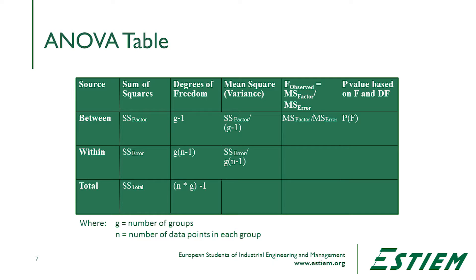In the degrees of freedom column, the between-sample is 5 minus 1, or 4. The within is g times (n minus 1) because each subgroup has 10 observations, so that's 10 minus 1, giving 45. The total degrees of freedom would be 49. We lose minus 1 degree of freedom because we're calculating everything relative to the mean. The next column is mean squared error or variance — that's the sum of squares for the factor divided by the degrees of freedom, and within is the sum of squares for the error divided by g times n minus 1, or 45.